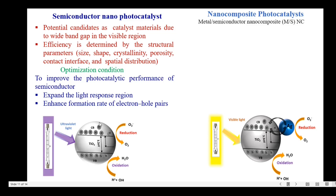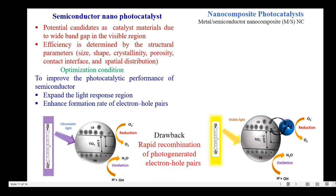The band gap of the TiO2 material can be modified or reduced by doping with metal ions. Another method is the preparation of nanocomposite photocatalysts. Since semiconductor nanoparticles have the drawback of rapid recombination of photo-generated electron-hole pairs, by preparing nanocomposite photocatalysts the recombination of electron-hole pairs can be delayed.